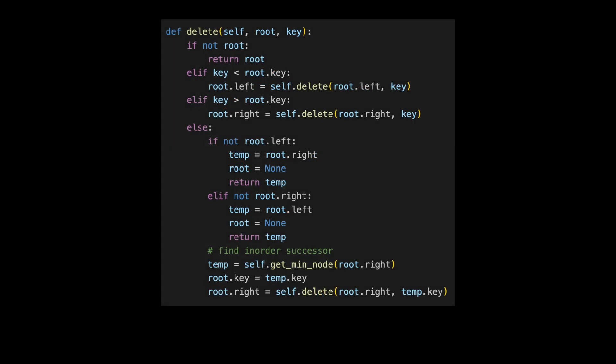The code for delete is similar to insert. We start at the root of the tree and traverse down, looking for the specified key to delete. Once we find it, we perform our three checks: if the node doesn't have a left child, doesn't have a right child, or has two children, in which case we need to find the in-order successor.